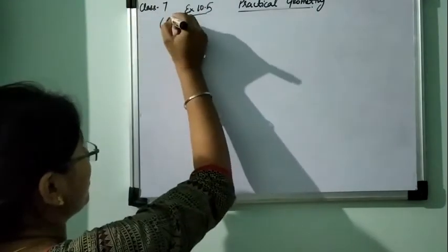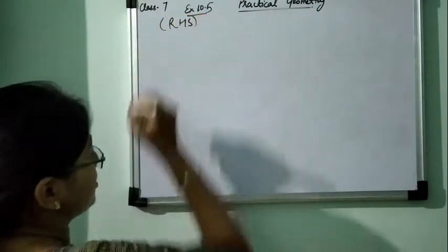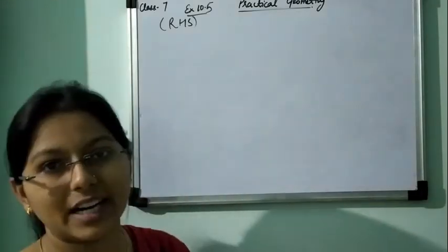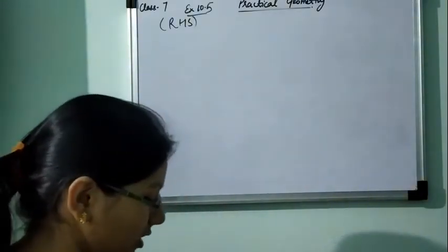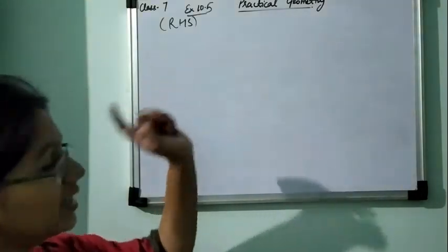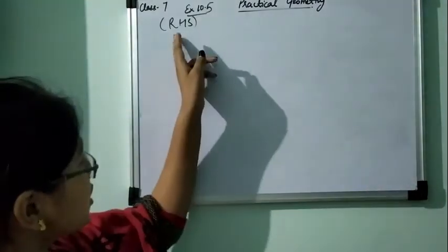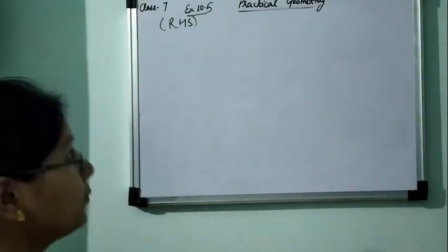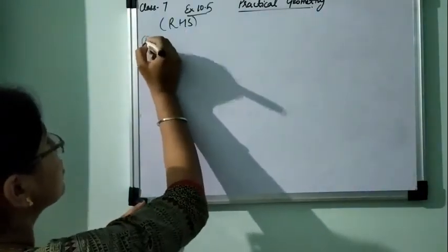Now we will discuss exercise 10.5 which is based on RHS. Means one right angle is given, one hypotenuse is given and one side is given. So how we can construct the triangle. See it's not that much difficult. But one thing is complete, in all of this construction, we have to draw one angle which will be 90 degree.